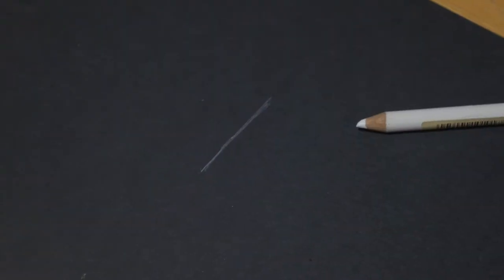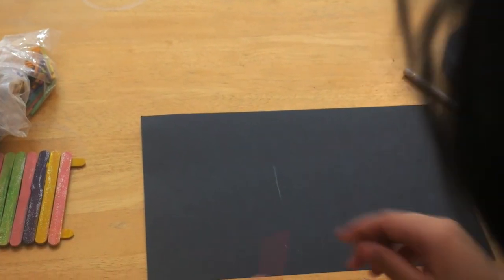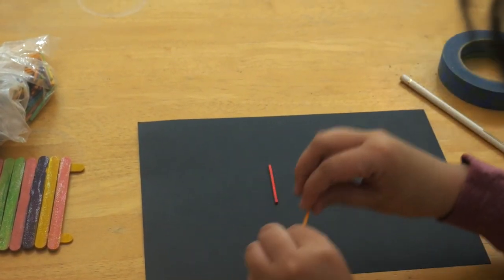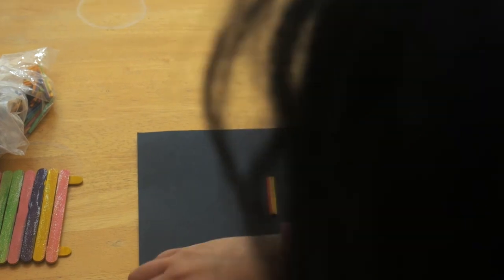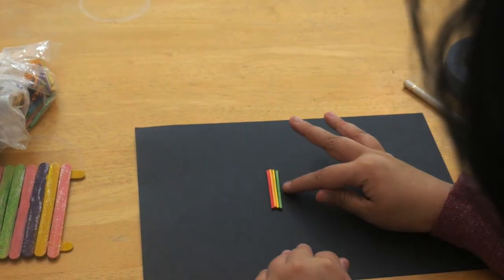First, make a mark to the left of the centre of the page, about the size of a matchstick. Line up the matchsticks with the marker, starting with red, orange, yellow, green, blue and then violet. Repeat the sequence up to four times.